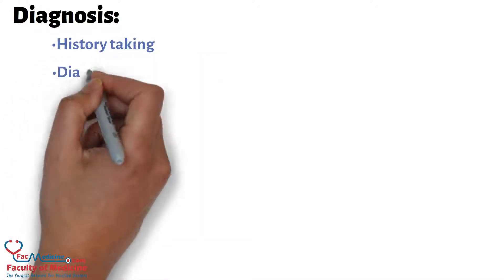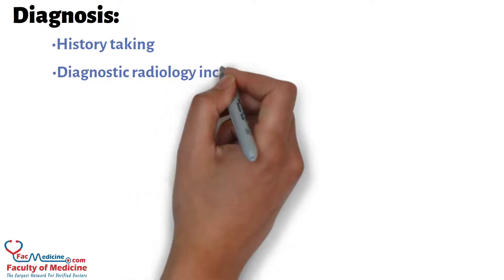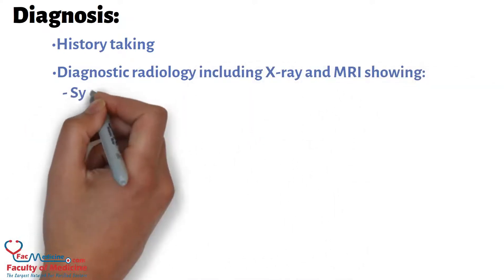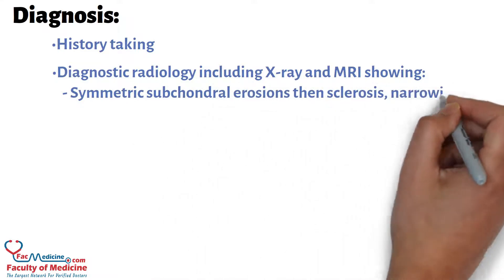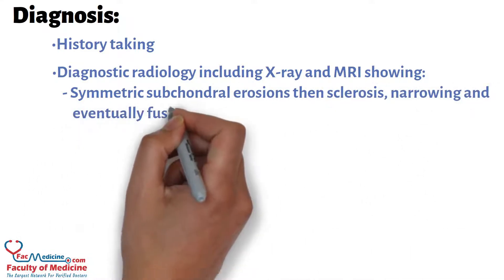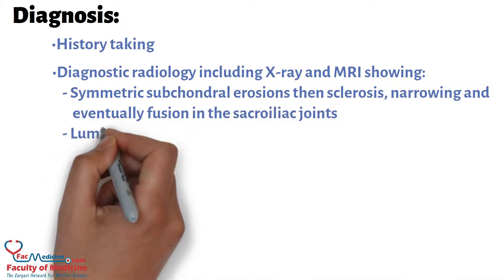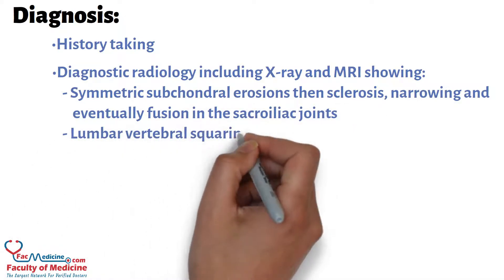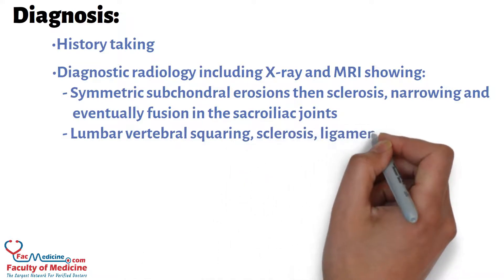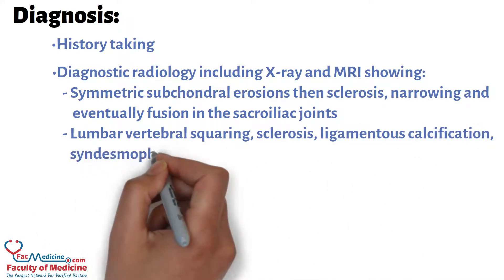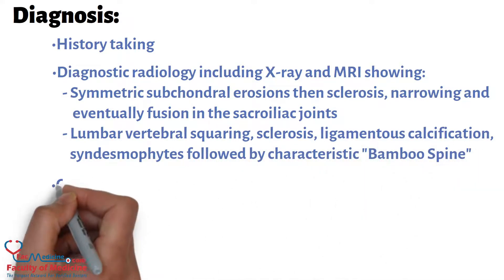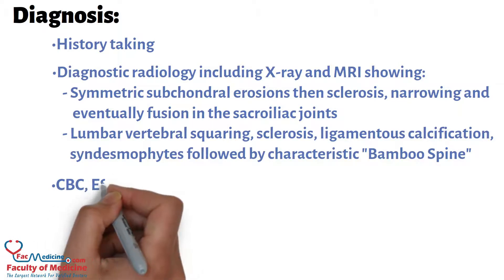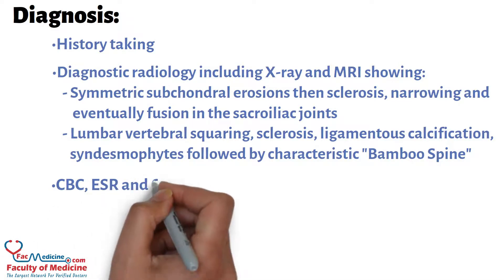Diagnosis involves history taking and diagnostic radiology including X-ray and MRI, which may show symmetric subchondral erosions then sclerosis, narrowing and eventually fusion in the sacroiliac joints, lumbar vertebral squaring, sclerosis, ligamentous calcification, syndesmophytes, and the characteristic bamboo spine. Laboratory tests include CBC, ESR, and CRP.